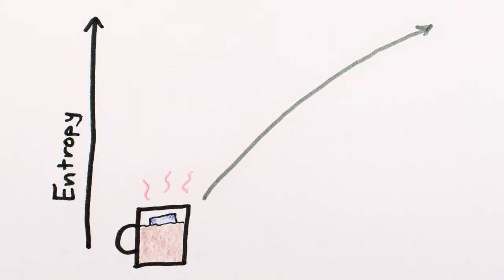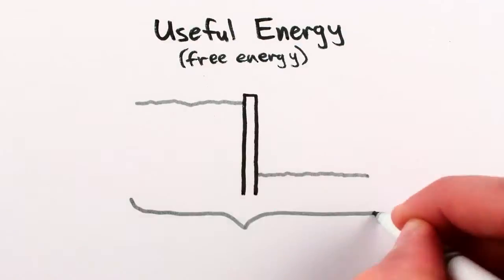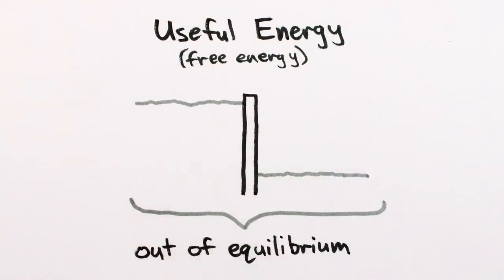even though the total energy would be the same. So useful energy is low-entropy out of equilibrium energy that can be put to work, to turn a turbine or push a piston or melt an ice cube.